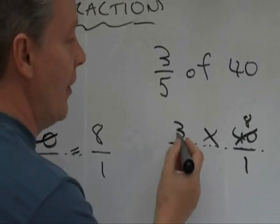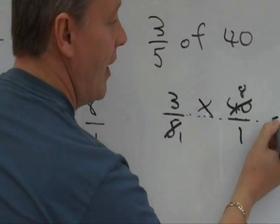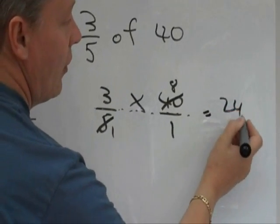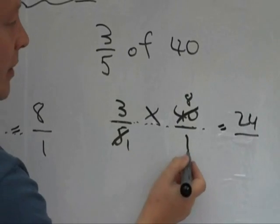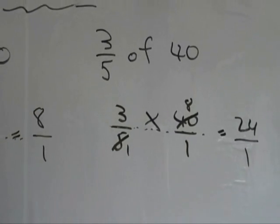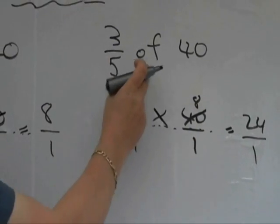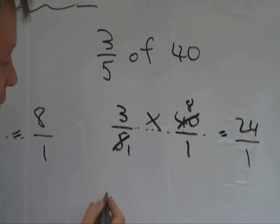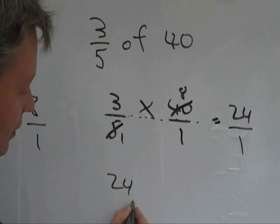So the question now is, 3 times 8, which is 24. 1 times 1, which is 1. So the answer to 3 fifths of 40 is 24 over 1, or 24.